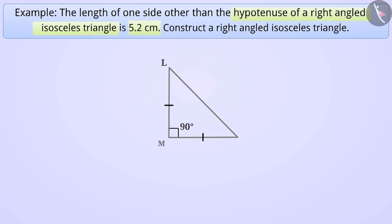In short, we have to construct a triangle LMN where MN is equal to ML is equal to 5.2cm and angle M is equal to 90 degree. Here, we can construct triangle LMN using the SAS criterion.